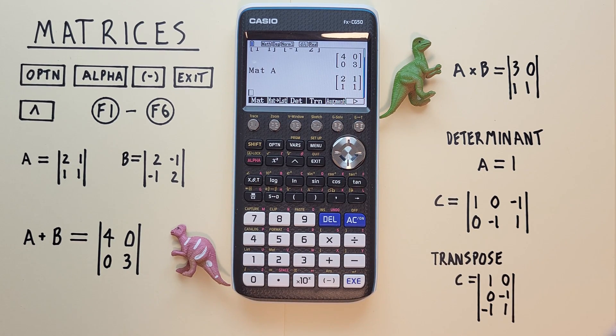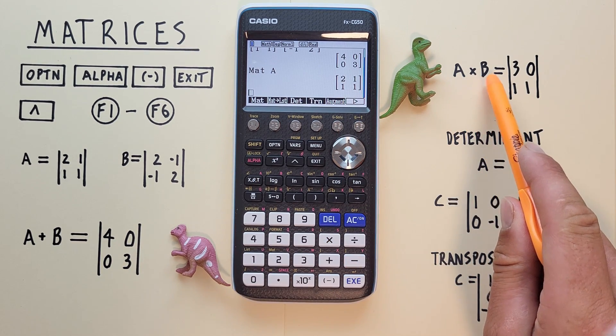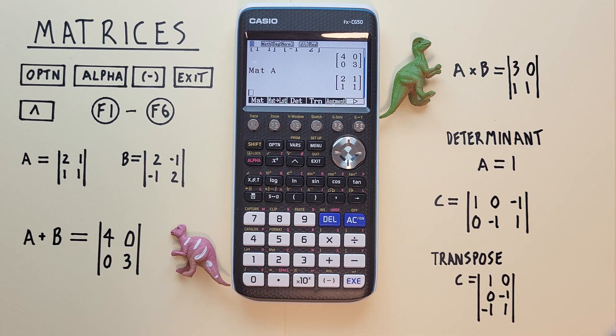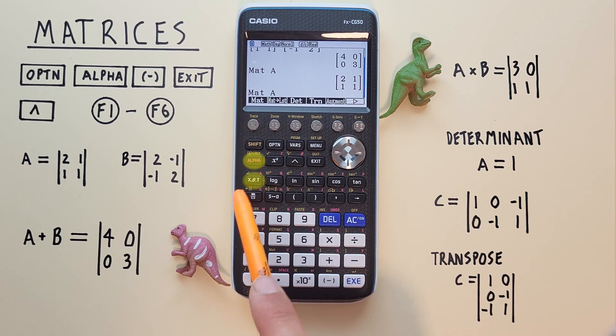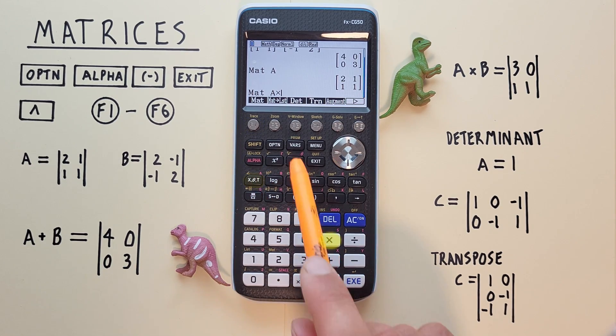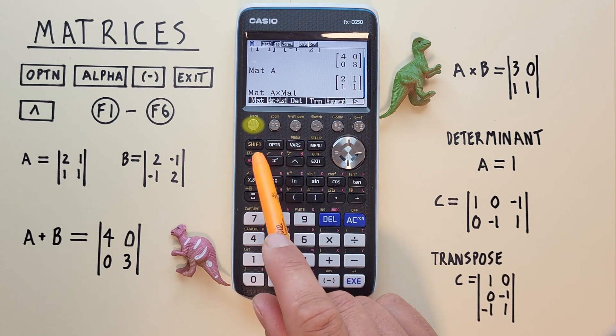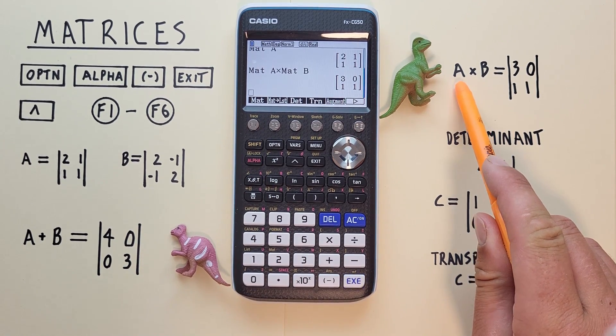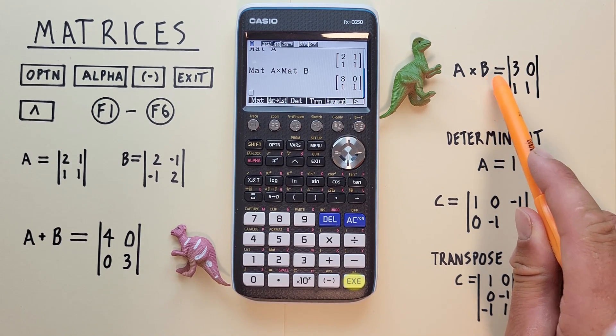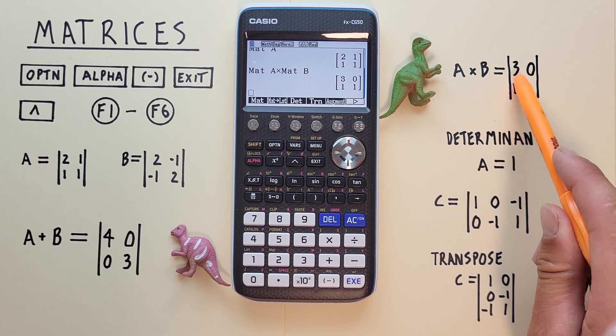Let's go ahead and do our matrix A times our matrix B. So again all we have to do is recall our matrix alpha A times matrix alpha B. Hit EXE, and we see we get the result. Our A matrix times our B matrix gives us this matrix here.